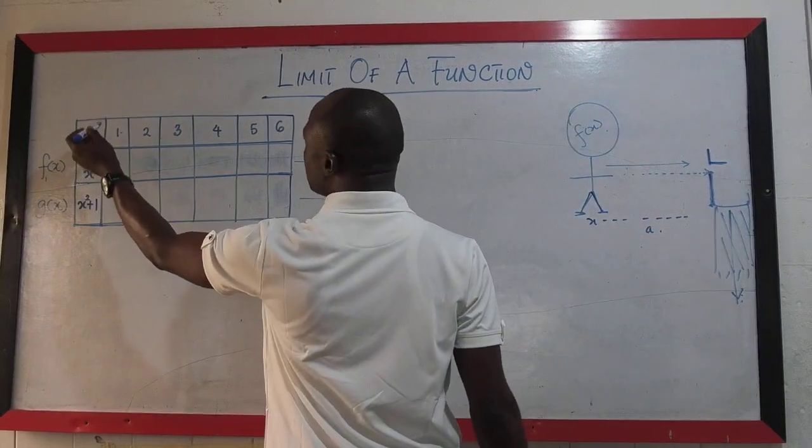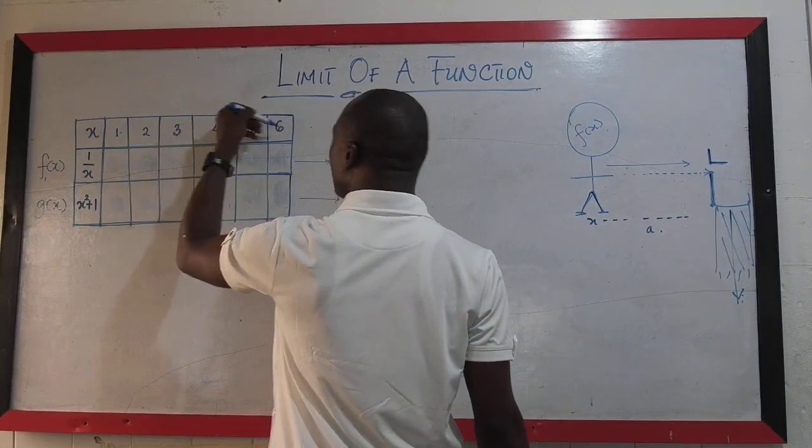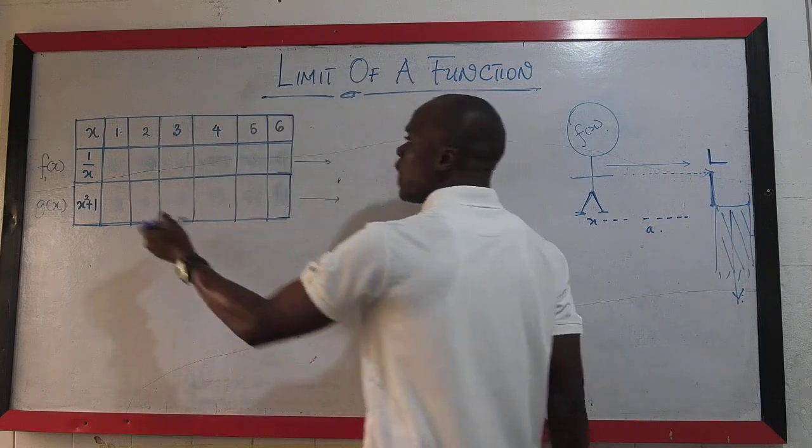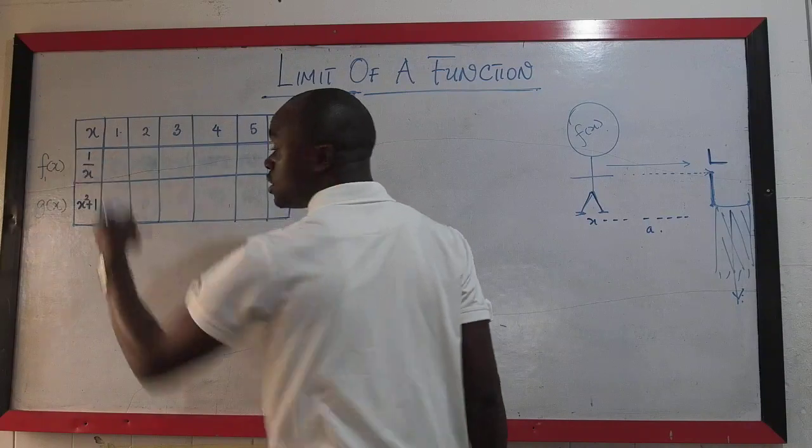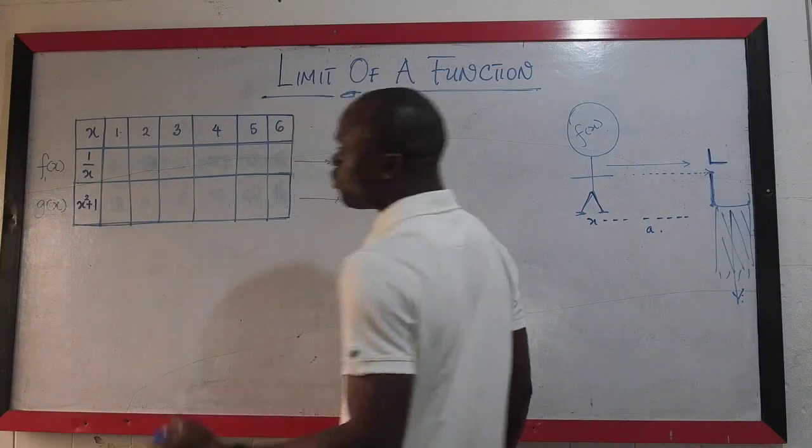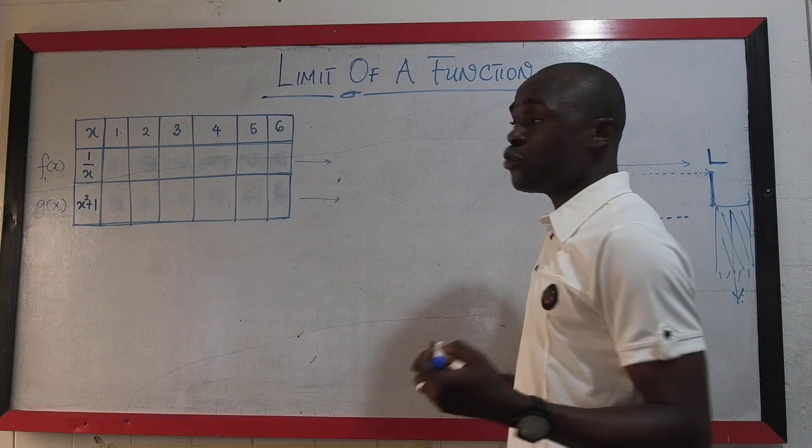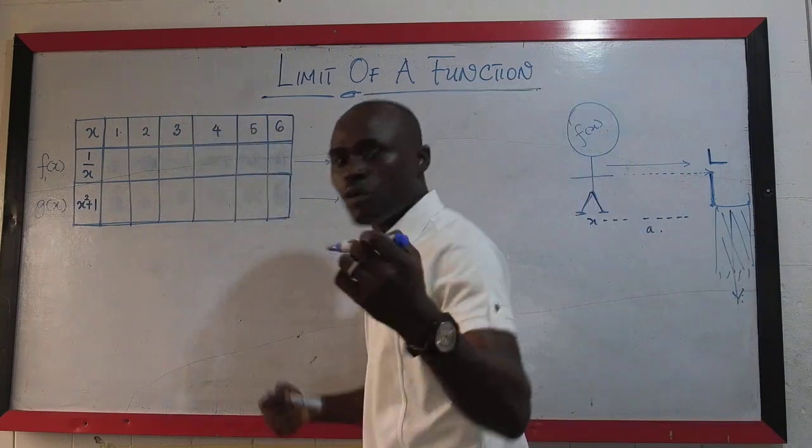Now, you have x values going 1, 2, 3, 4, terminally to infinity. And we also have a particular function here, f of x, which is 1 over x. We have another function here, which is x squared plus 1. Now, I am going to substitute these values in here to see what we have.